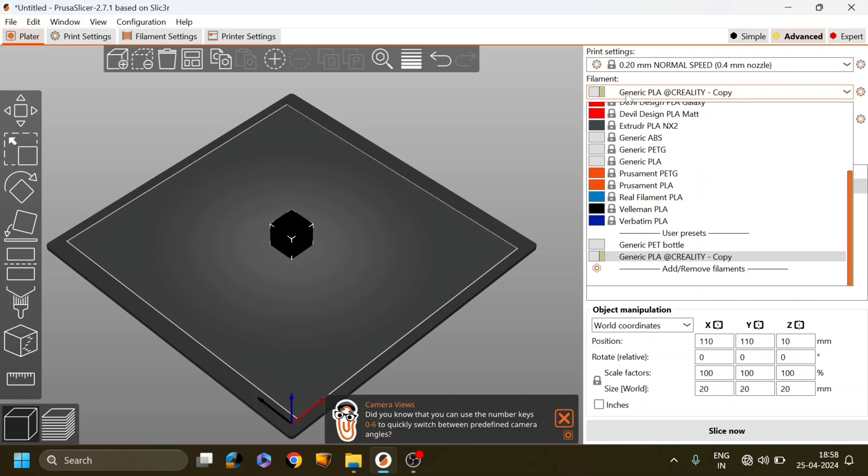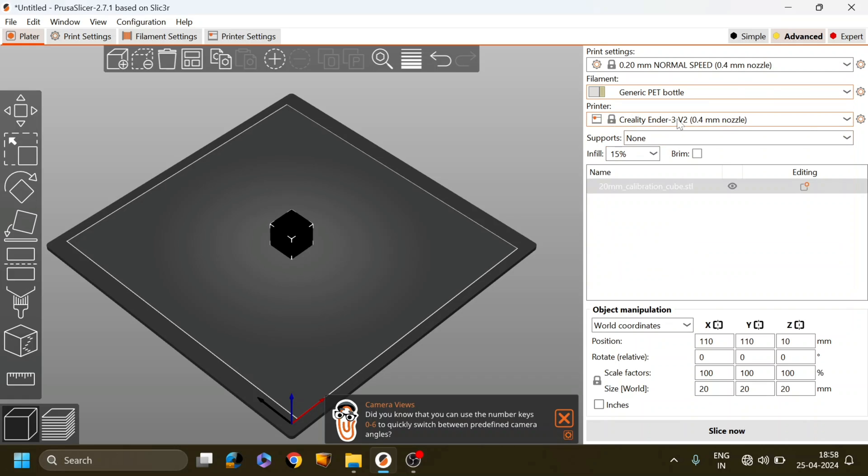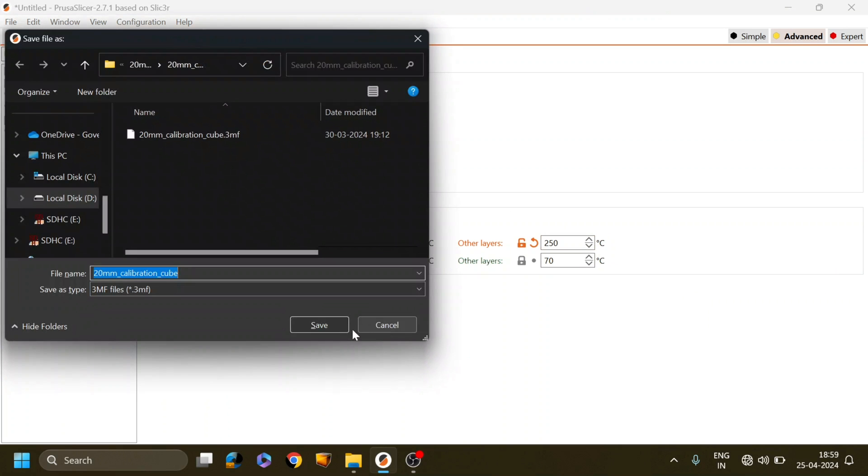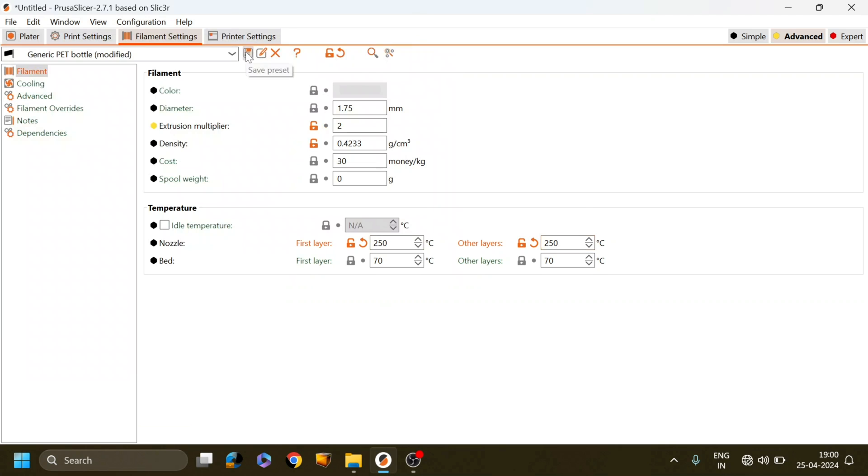I am using Prusa Slicer. I have selected Generic PET Bottle profile which I have used earlier. Go to the filament setting and under extruder multiplier I have selected 2. This value can vary from machine to machine and I have set nozzle temperature to 250 degree Celsius and bed temperature is 70 degree Celsius.